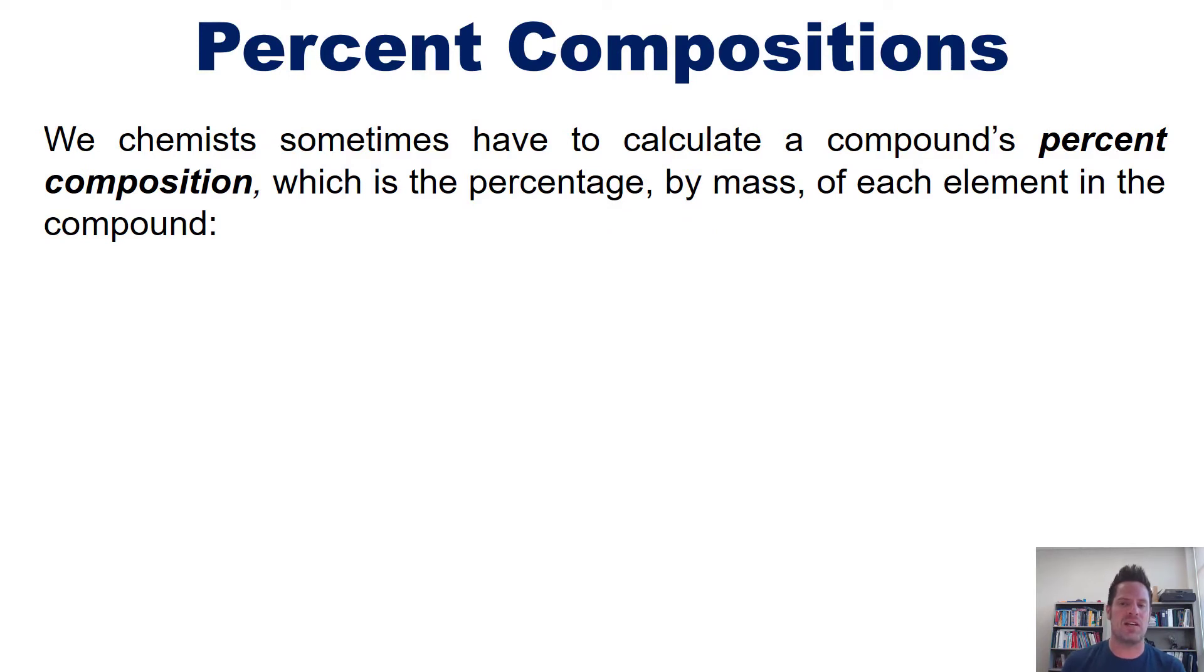So we chemists sometimes have to calculate a compound's percent composition, which is the percentage by mass of each element in the compound. This is done by using the following formula.